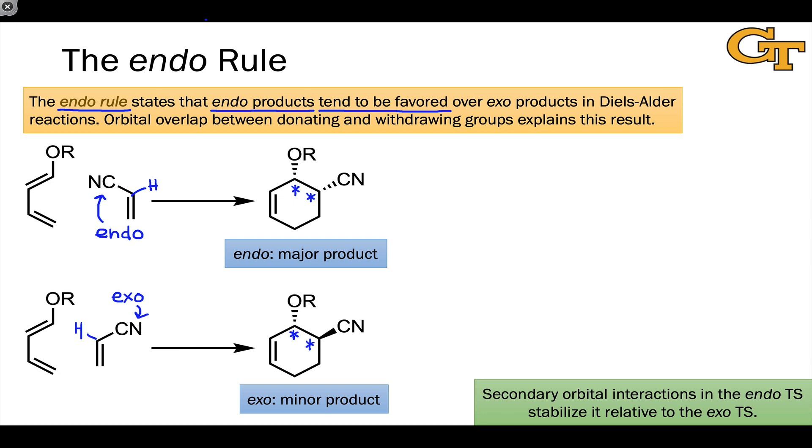To explain this, we can think about orbital interactions between the substituent and the diene itself. These interactions don't directly involve the carbons that are bonding in the diene and dienophile. Because they're sort of peripheral to the actual chemical change that's going on, but they do still exert an influence on the stability of the transition state, we call them secondary orbital interactions. These exist in the endo transition state but not in the exo transition state. Let me demonstrate that now by drawing out the two possible transition states.